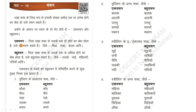The definition of Ek Wachan: Jis sangya sab se uske ek hi honne ka bot hota hai, usse ek wachan kehte hai. That means, when a noun word indicates only one thing, it is called Ek Wachan — singular. For example: Mitha, Pangkha, Kala, etc. These are singular in English as well.